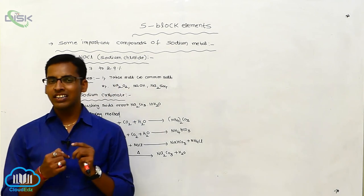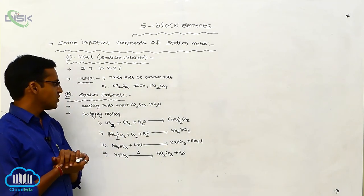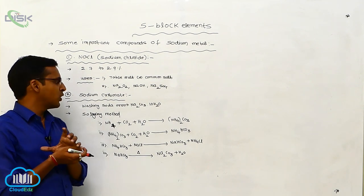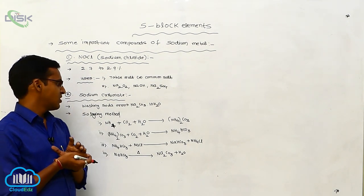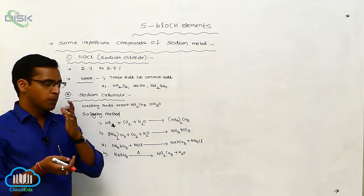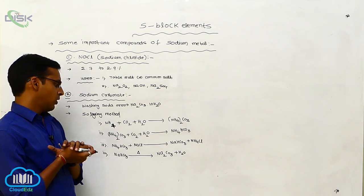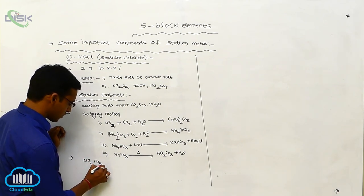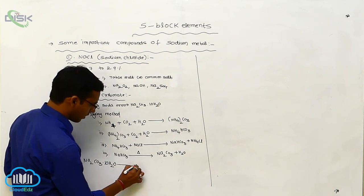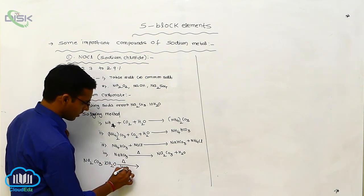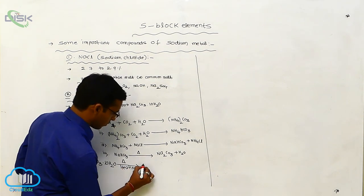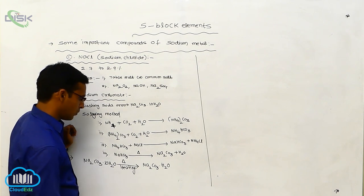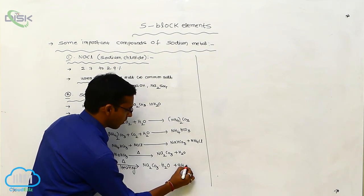Sodium carbonate is generally called washing soda. Washing soda is a white crystalline solid. Its formula is Na₂CO₃·10H₂O (sodium carbonate decahydrate). On heating, it loses one water molecule to produce Na₂CO₃·9H₂O (monohydrate step), with 9 moles of water remaining. On further heating, the water is completely removed.